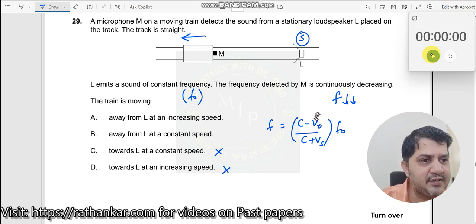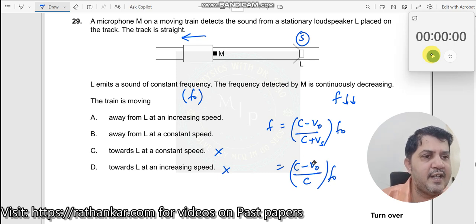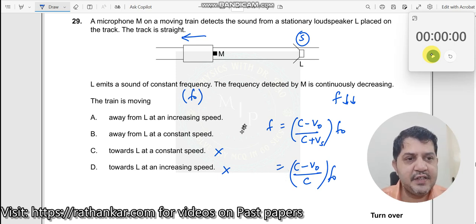But if this value of V observer is increasing, first let us write down the modified formula. I will write this as C minus V observer divided by C into F naught. So this is continuously decreasing. If this is continuously increasing, then F will be continuously decreasing, which is what is happening now.